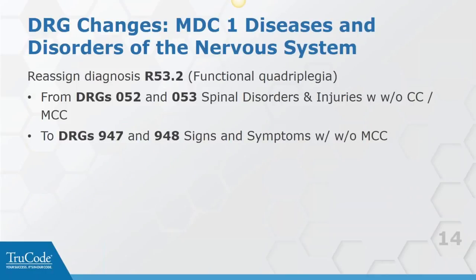In MDC1 - diseases and disorders of the nervous system - code R53.2, which is functional quadriplegia, has been reassigned from the DRGs for spinal disorders and injuries to DRGs 947 and 948 for signs and symptoms. When I list DRGs with a single title, the first one is with CC/MCC and the second is without. This change was made as a request from a commenter who stated that functional quadriplegia does not involve spinal injury, so it was completely misclassified. CMS reviewed it, their clinical advisors agreed - it's a symptom because it could result from a variety of conditions.